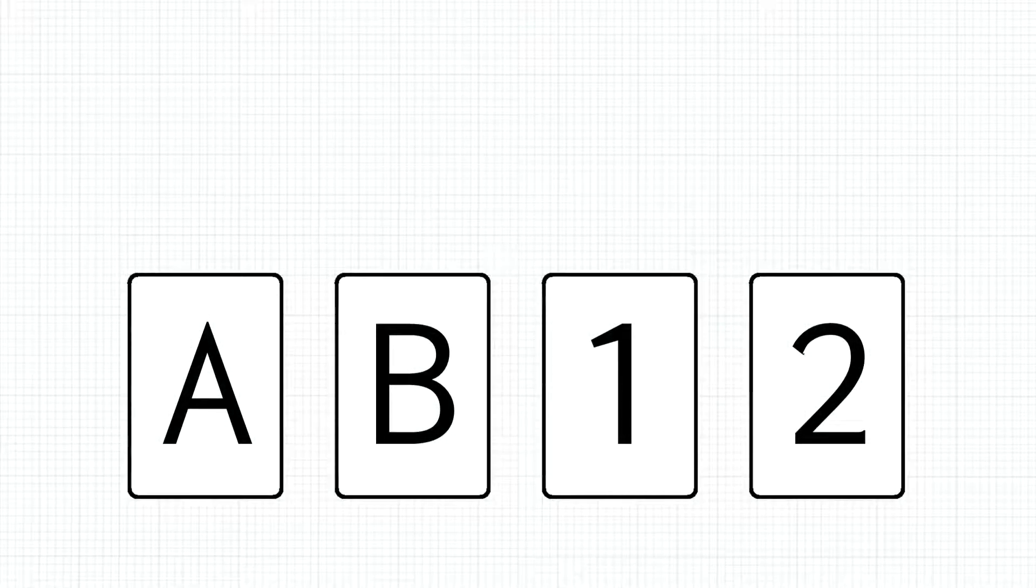On a table, there are four cards. Each card has a number on one side and a letter on the other side. The face-up sides of these cards are A, B, 1 and 2. Now consider the following rule.